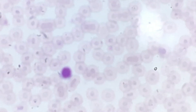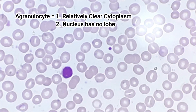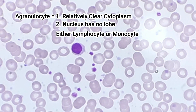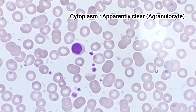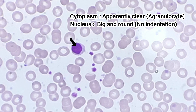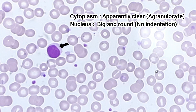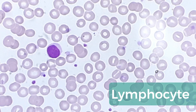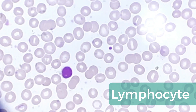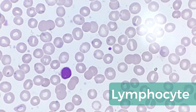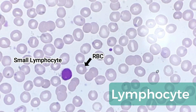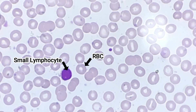Let's focus on the agranulocytes, which have relatively clear cytoplasm and nuclei with no lobes. You have to limit your thought to either lymphocyte or monocyte only. See this leukocyte with apparently clear cytoplasm — its nucleus is quite big, dark purple in color, round in shape with no indentation, and the nucleus is surrounded by a very thin rim of cytoplasm. It is obviously a lymphocyte. There are two varieties: large lymphocyte and small lymphocyte. The size of the nucleus of a small lymphocyte is approximately the same as the size of an RBC — you can easily compare that on the slide by the surrounding RBC in PBF.